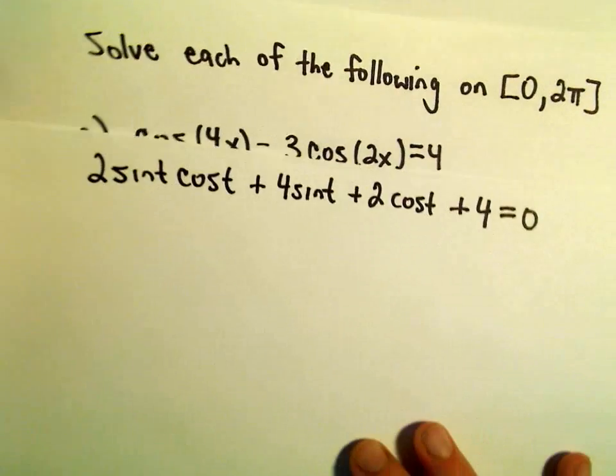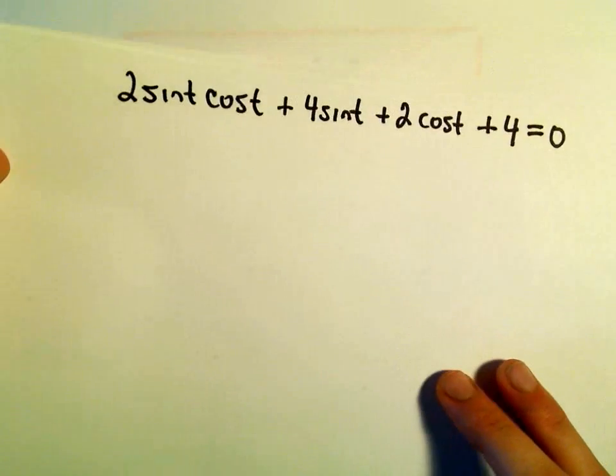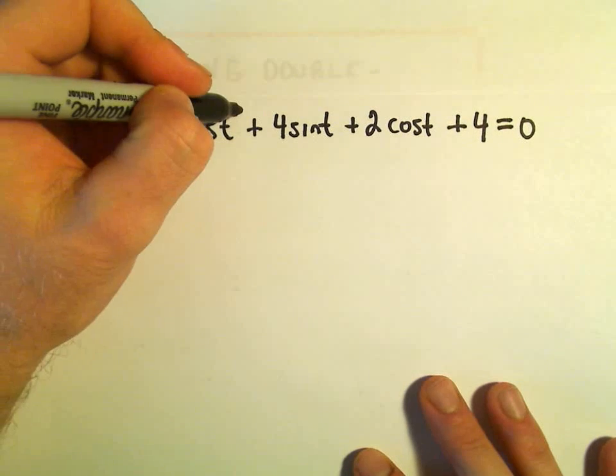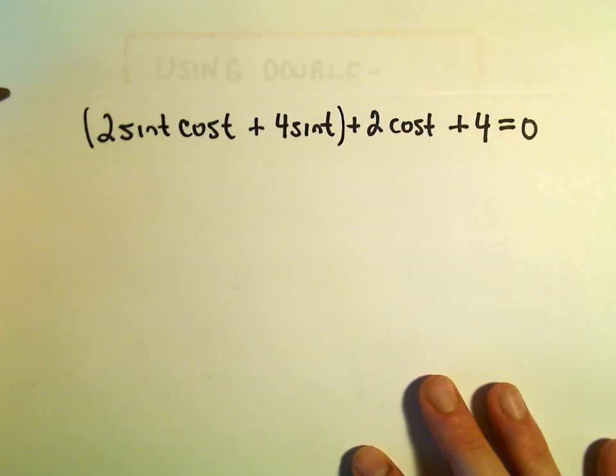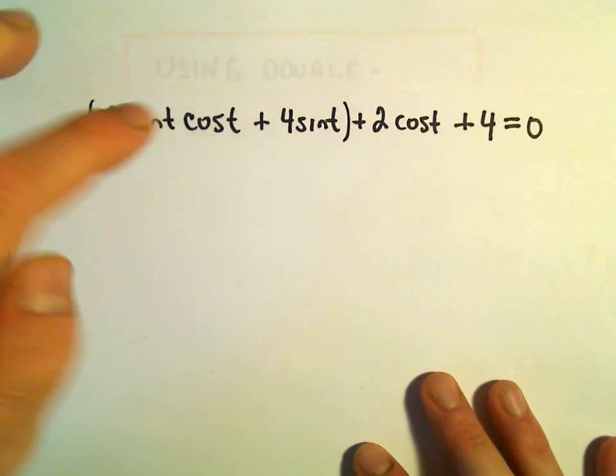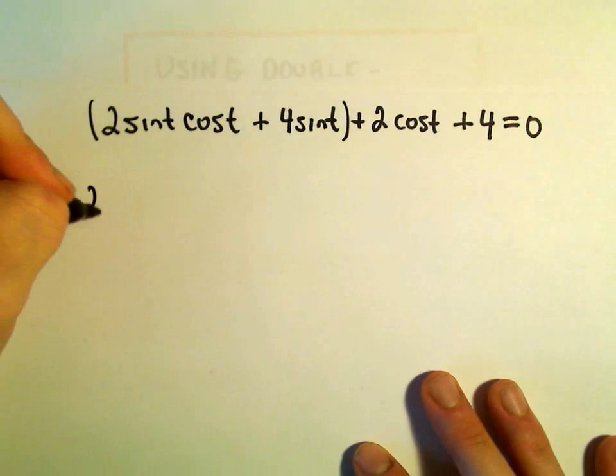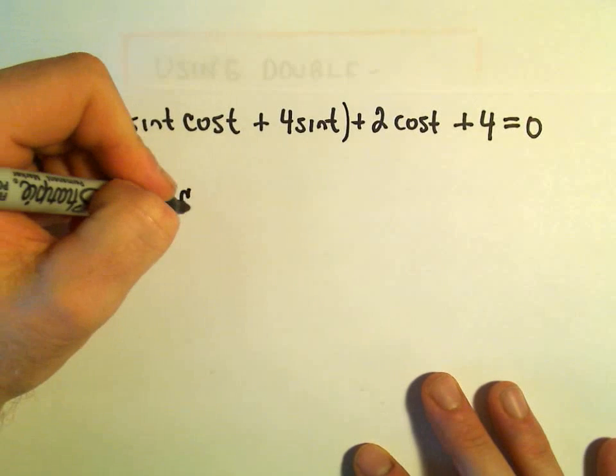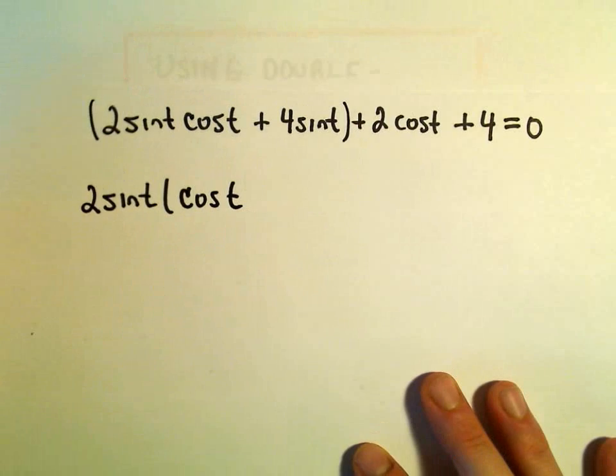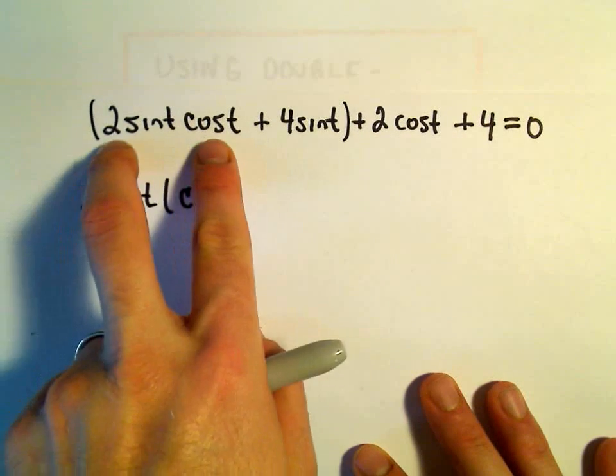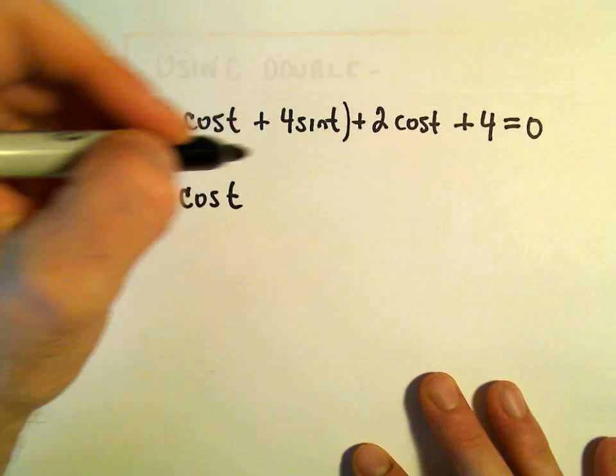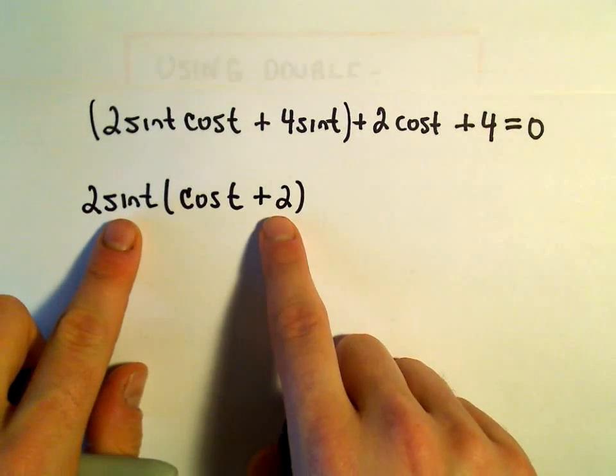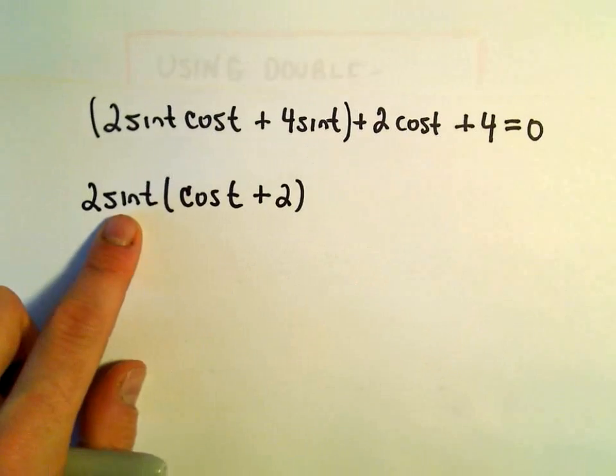And now what we have, we've got 4 terms kind of hanging out on the left side. So I'm going to do a little factoring by grouping here. And so I'm going to group the first two terms together. So notice we could factor a 2 out. And we could also factor a sine t out. And I believe that would leave me with a cosine. So 2 sine t times cosine t will give us our first term. 2 sine t, if we multiply that by a positive 2, we'll get our positive 4 sine t.